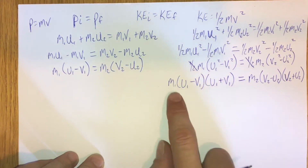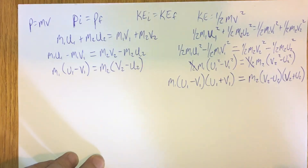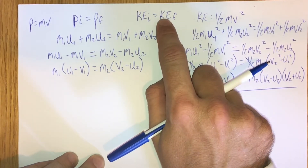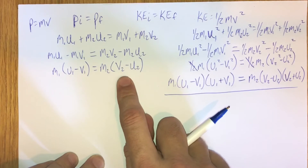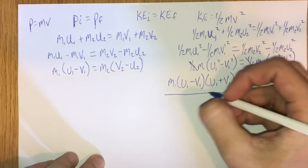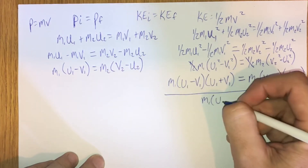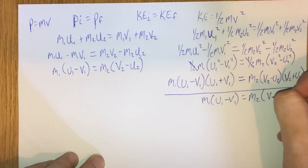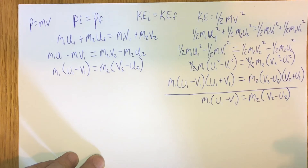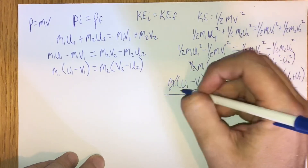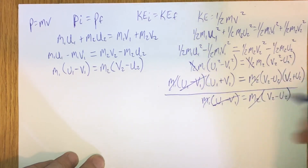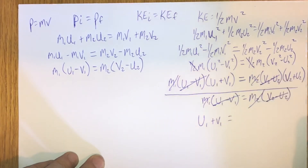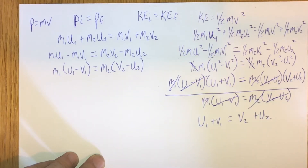Now we divide the kinetic energy equation by the momentum equation. We have M1 times (U1 minus V1) equals M2 times (V2 minus U2). M1 cancels, (U1 minus V1) cancels, M2 cancels, and (V2 minus U2) cancels, leaving us with U1 plus V1 equals V2 plus U2.